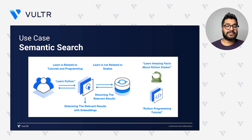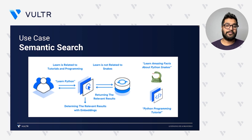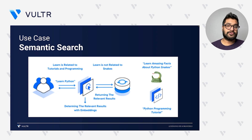Semantic search is another real-world application of AI/ML models. Semantic search is prevalent in various platforms like search engines, e-commerce websites, and content management systems. It helps users find more precise and contextually relevant information by understanding the intent behind their queries. You can implement semantic search in your organization by converting documents into embeddings and storing them in a vector database, which can then be used to run queries. You may refer to the documentation linked in the description box.